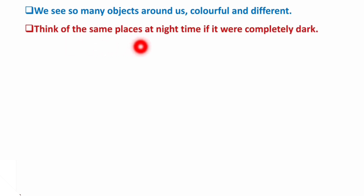Think of the same place at night time if it were completely dark. You are standing there, but it is completely dark. Would you be able to see those objects? Is it possible to see them? The answer is simply no, it is not visible. If it is completely dark, objects will not be visible.